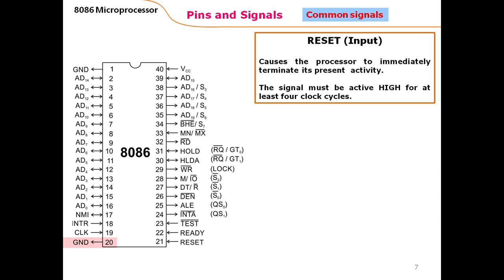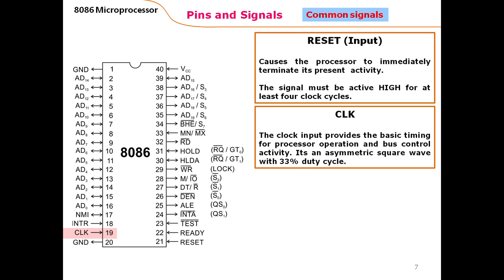GND is simply connected to ground voltage — zero volts. The CLK pin is a very important input pin. The clock input provides the basic timing for the microprocessor and all bus control activity. All activities inside the microprocessor are synchronized with the clock signal received through this input pin. It is an asymmetric square wave with a 33% duty cycle, meaning the signal is high for one-third of the time and low for two-thirds of the time.